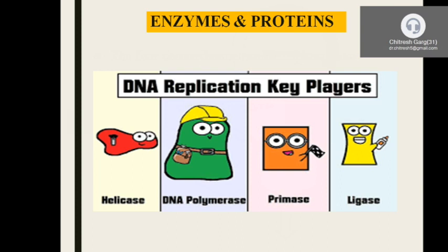Functions of individual DNA polymerases in prokaryotes: Polymerase 1 — gap filling following replication and DNA repair/recombination. Polymerase 2 — DNA proofreading and repair. Polymerase 3 — leading strand synthesis in E. coli. In eukaryotes: Beta — DNA repair. Gamma — mitochondrial DNA synthesis. Epsilon — leading strand synthesis. Alpha — acts as primase. Delta — lagging strand synthesis.